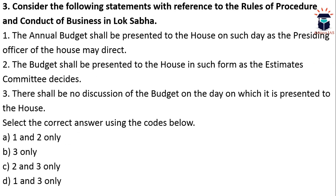The third question: Consider the following statements with reference to the Rules of Procedure and Conduct of Business in Lok Sabha. First — the annual budget shall be presented to the house on such day as the presiding officer of the house may direct. Second — the budget shall be presented to the house in such form as the Estimates Committee decides. Third — there shall be no discussion of the budget on the day on which it is presented to the house. Statement 1 is incorrect — it is not the presiding officer but the President of India who decides on which day the annual budget is presented. Statement 2 is also incorrect — the budget is presented in the form the Finance Minister decides.